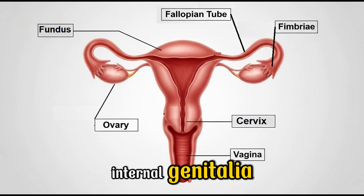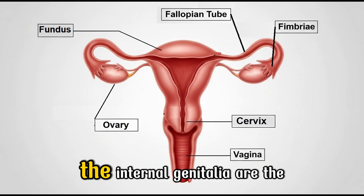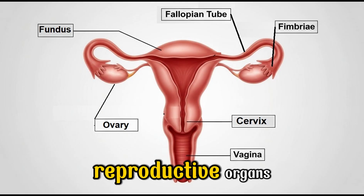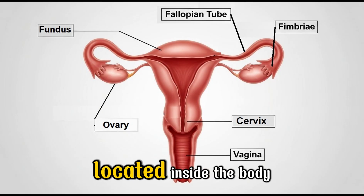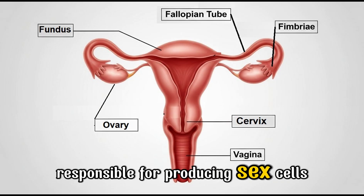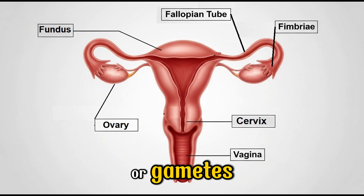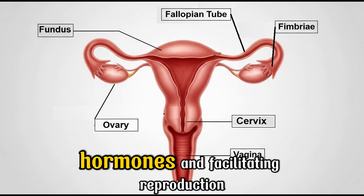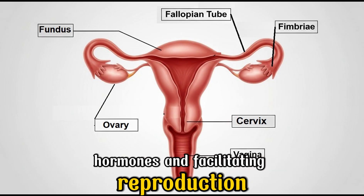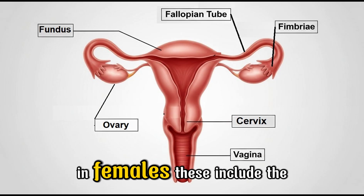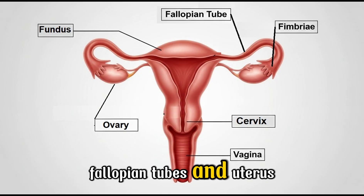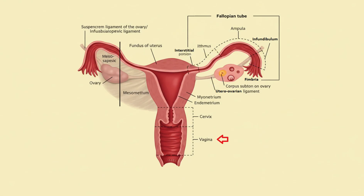The internal genitalia are the reproductive organs located inside the body, responsible for producing sex cells or gametes, hormones, and facilitating reproduction. In females, these include the ovaries, fallopian tubes, and uterus.